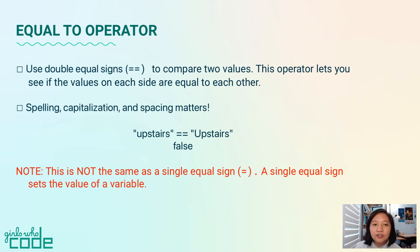This is different from the single equal sign we use for our variable. We use one equal sign to set the value of a variable. Here you actually change the variable value.